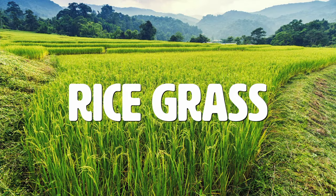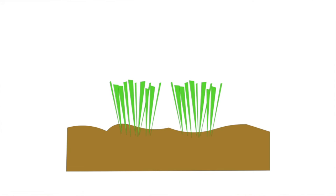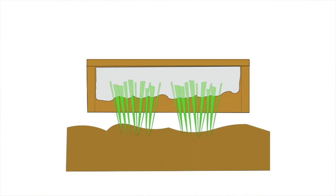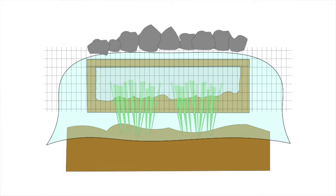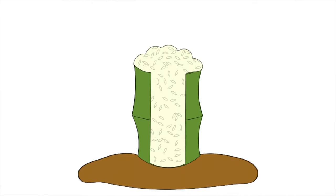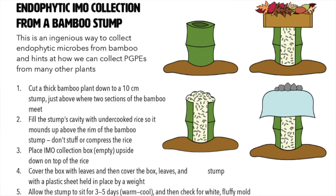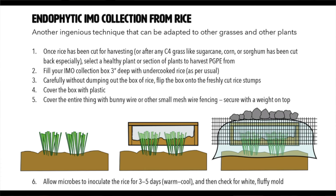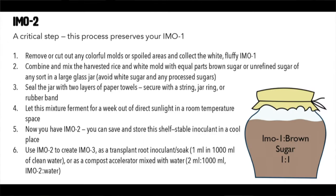You can also do endophytic IMO1 — placing that partially cooked rice on top of grasses, corn, sorghum, or bamboo. The exudates literally exuding from the cut phloem and xylem of the plant go directly into the rice and inoculate it. You cover it and put rocks on top. The same principle applies with bamboo — you can collect the microbes inside these plants and then scale them up.